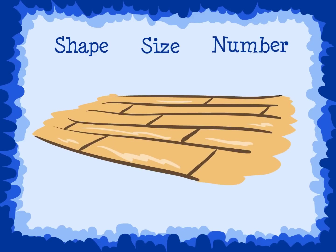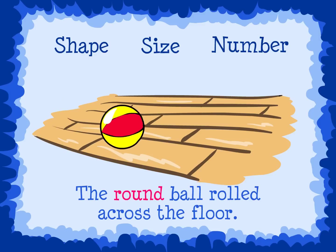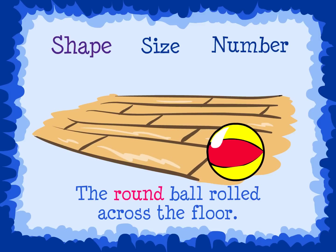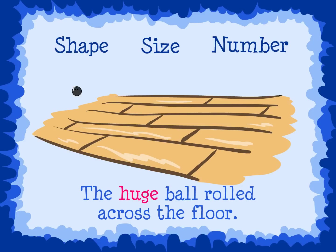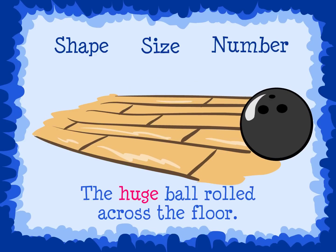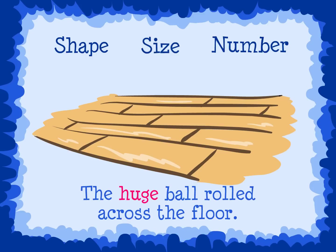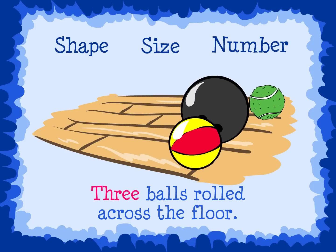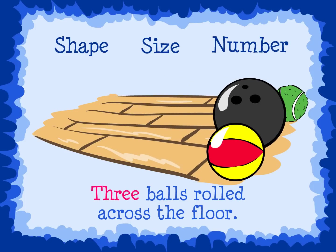For example, the round ball rolled across the floor. This describes the shape of the ball. The huge ball rolled across the floor. This describes the ball's size. And finally, three balls rolled across the floor. This describes the number of balls.